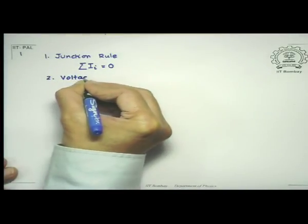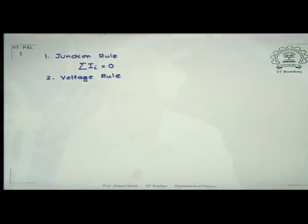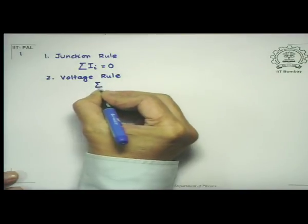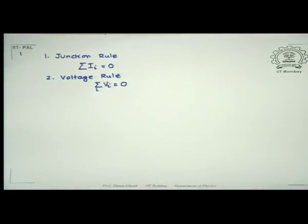The second is the voltage rule: if you go around any closed loop, the net drop of voltage is equal to zero — you return back to the same point. If you move in the direction of the current and pass through a resistance, the potential will drop. In a battery, when you travel from the negative to the positive terminal, the potential will increase.